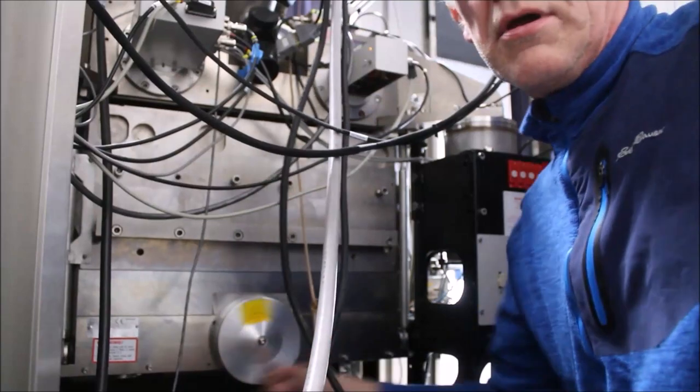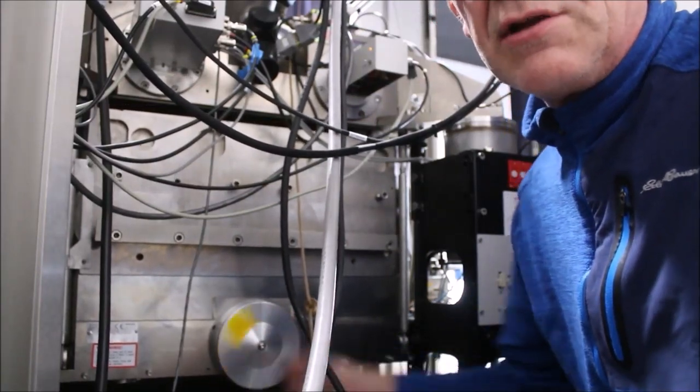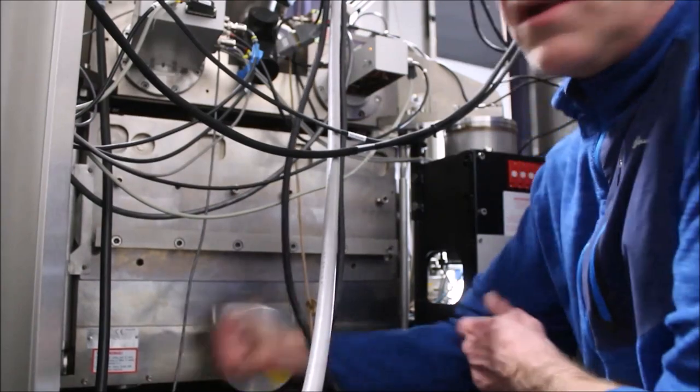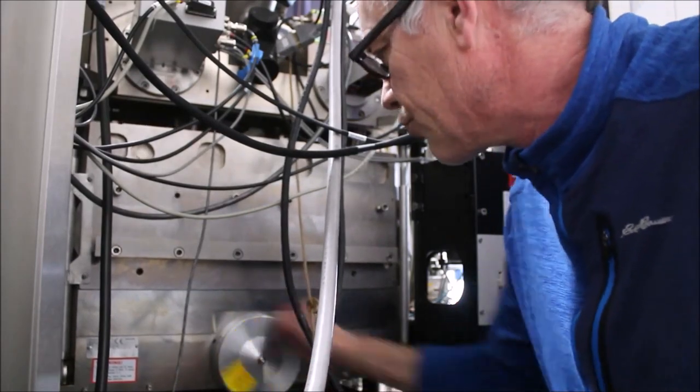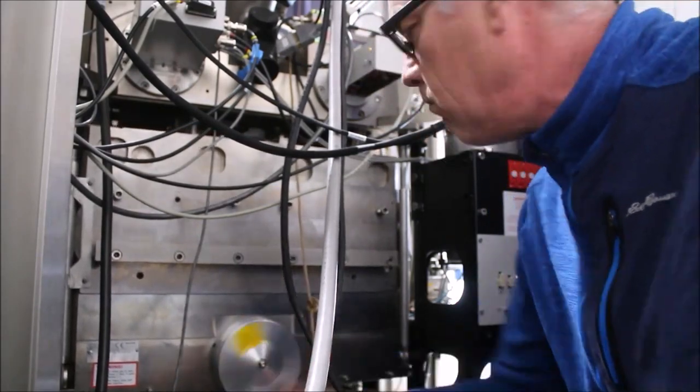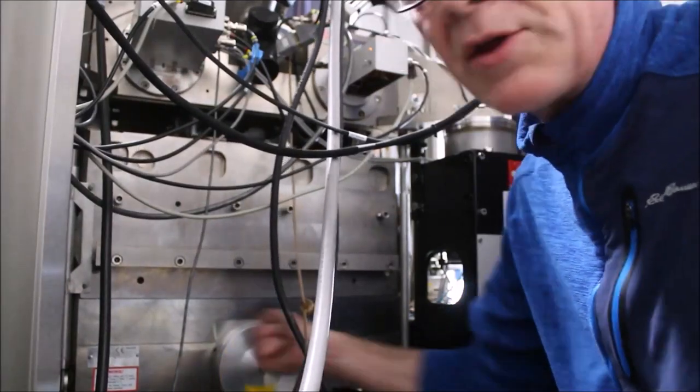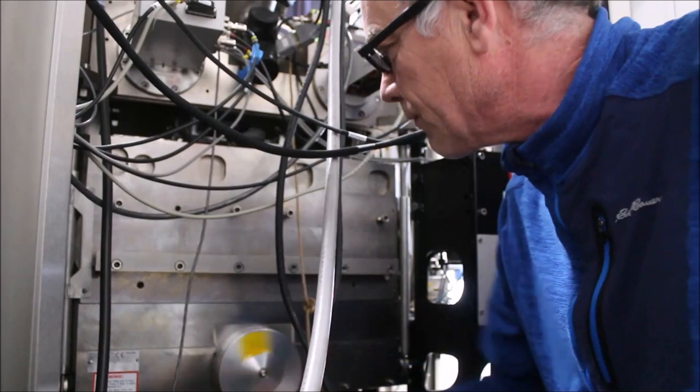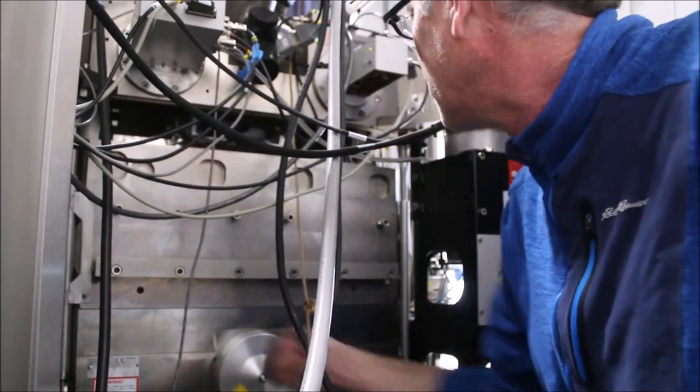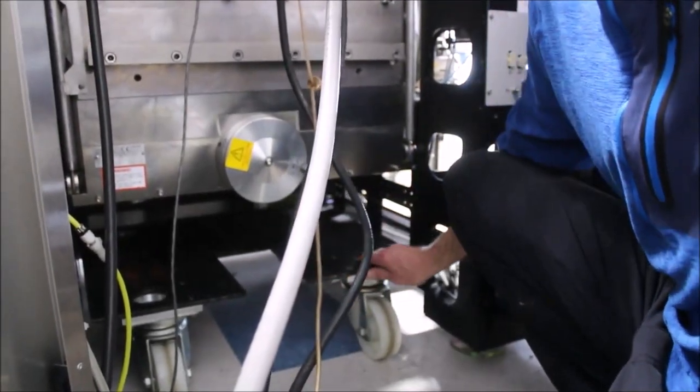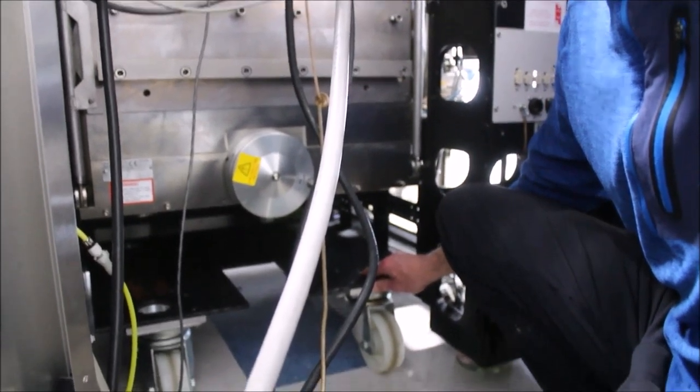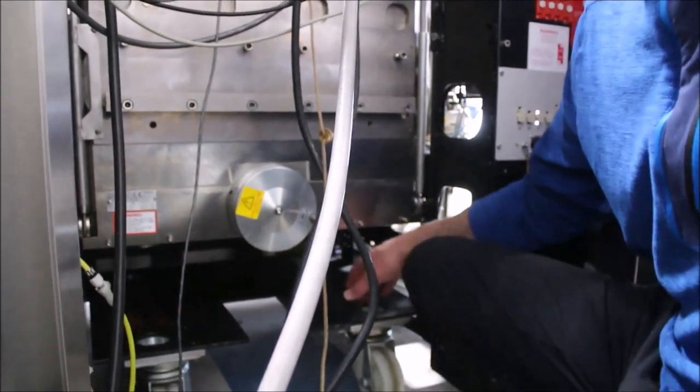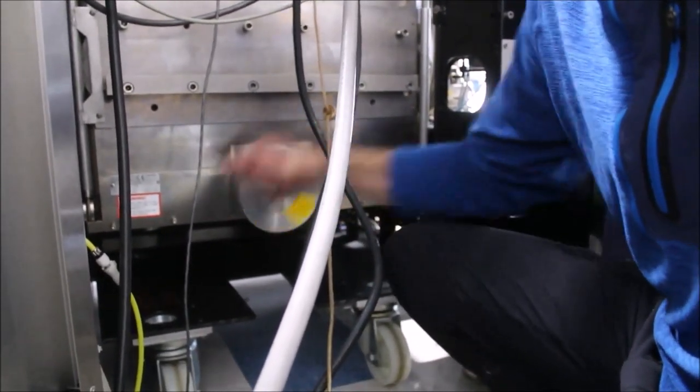We're going to start by bringing the sump down by turning this handle. Everything should move smoothly. If it feels like it's binding or giving you trouble, there might be a problem with the cables and that'd be a different service issue. Let's lower it down onto this little cart with wheels so we can pull the sump out and access the stage.